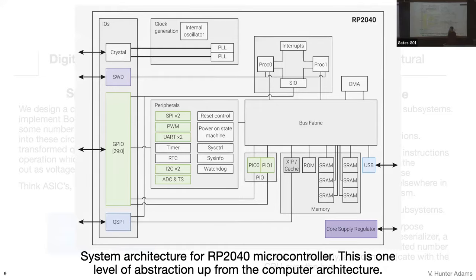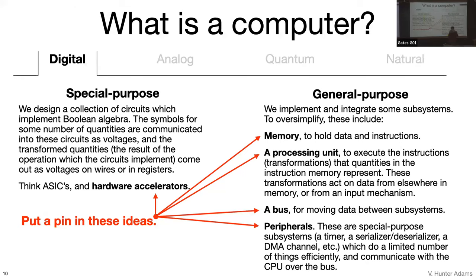As an example, here's the internal architecture of the RP2040 microcontroller. We can see a couple of processors up here, plugged into a bus—the mechanism by which we move data around between subsystems. We have memory here, more memory there, and peripherals including timers, serializer/deserializers, and an analog-to-digital converter. I'm reminding you of these things for context because I want to introduce a new flavor of computer—the natural computer—and when I do so, I want to return to these ideas. Put a pin in hardware accelerators, memory, processing units, bus, and peripherals.